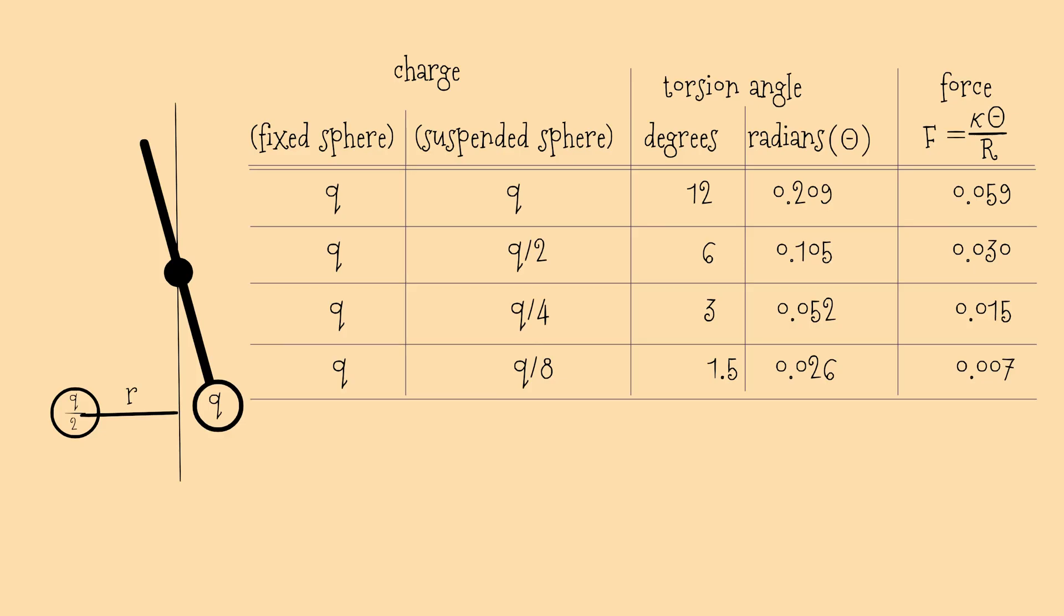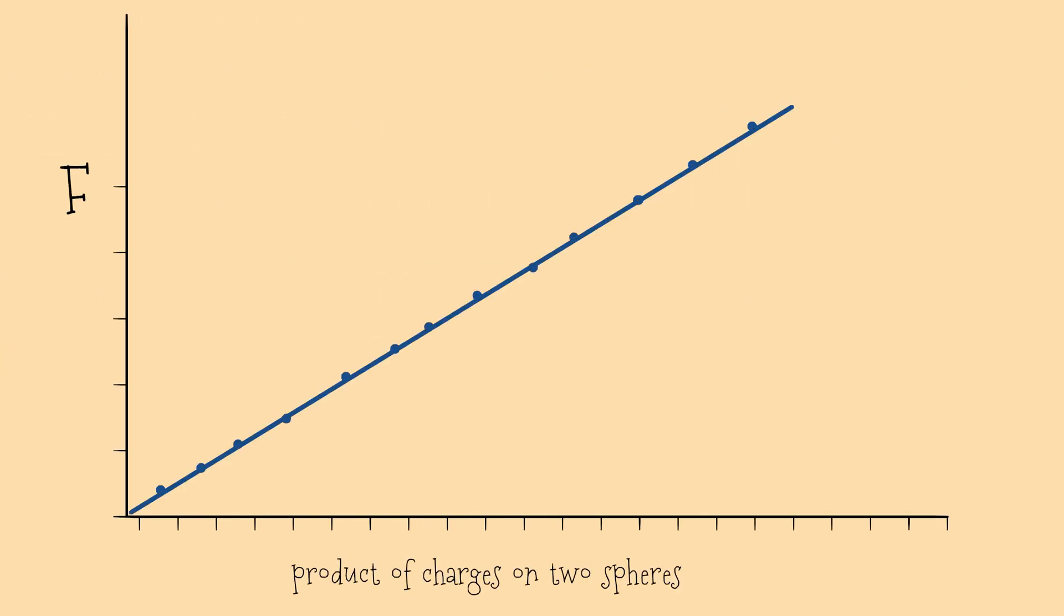Plot force against, say, Q1 plus Q2. Nah, that's messy. But F against Q1 times Q2? Straight line through the origin, so F is proportional to Q1 times Q2 divided by R squared.